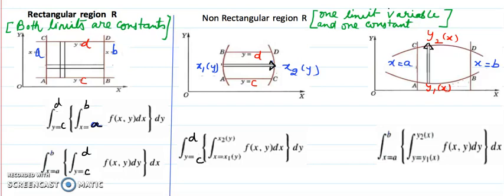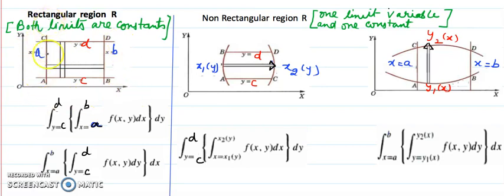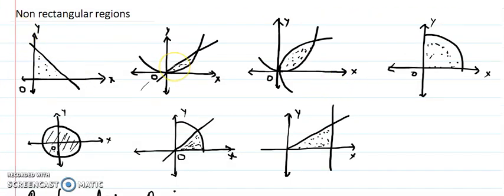I want to share with you again what we have seen: there were three cases — either we have constant limits, or x-variable limits with y constant, or y-variable limits with x constant. Whenever the boundary is rectangular or square in shape we always get constant limits for both. If the region is curved or made up of slant lines, then variable limits will come. You can see this with the help of some examples here, so that you get clarity on why the limit comes out to be variable.